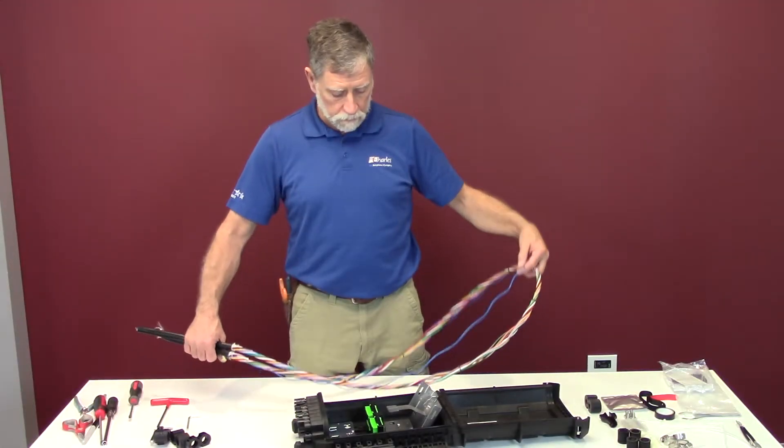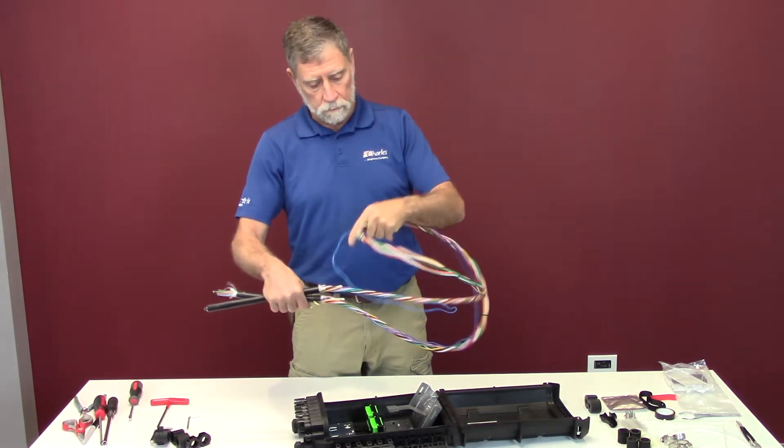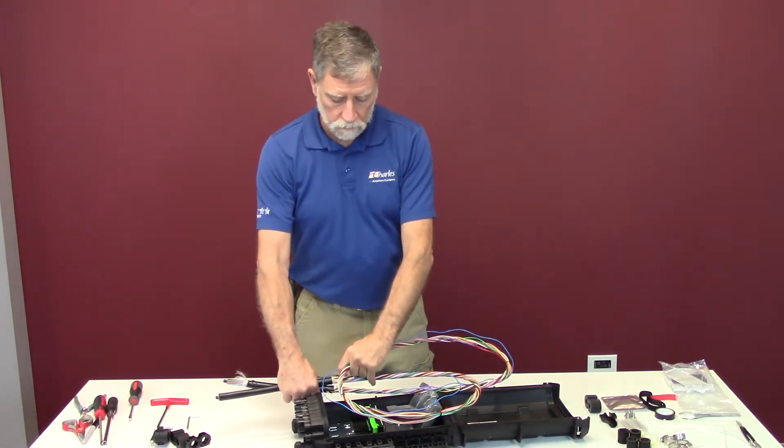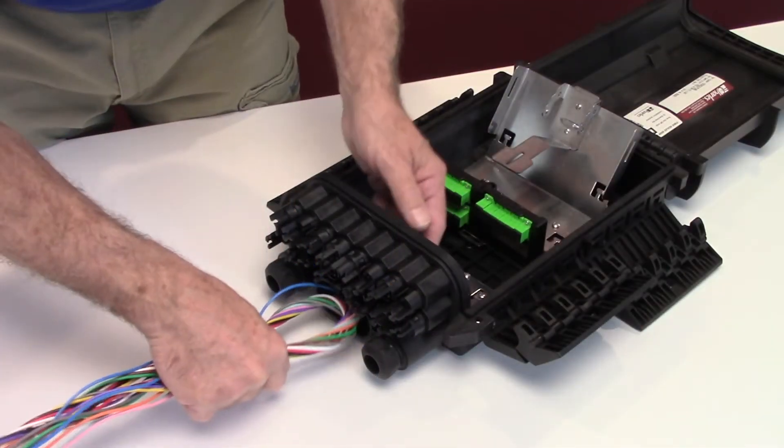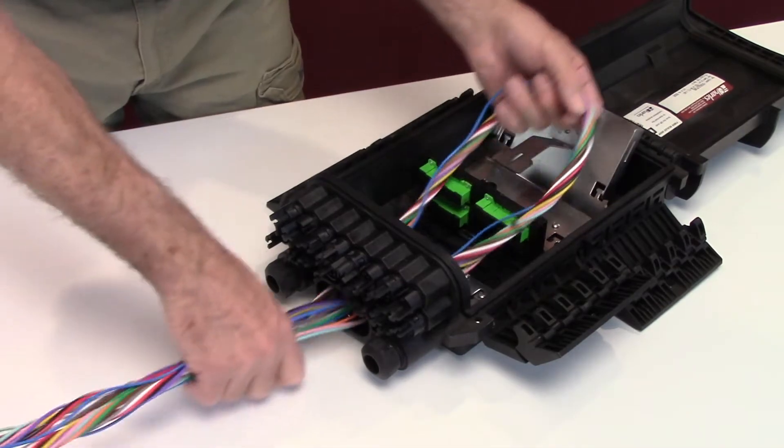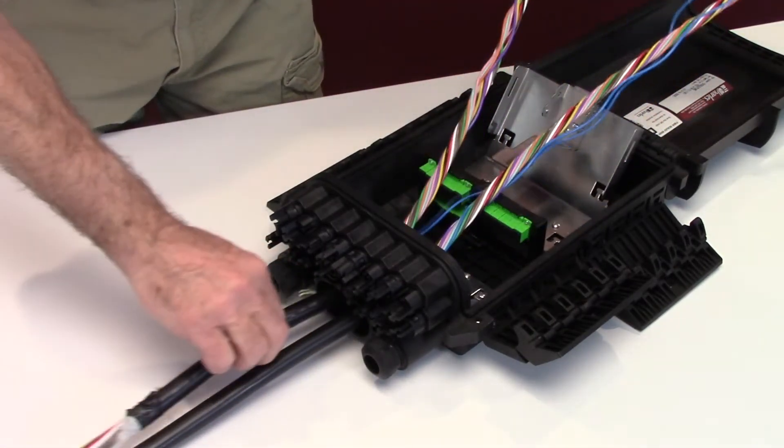The express cable loop must be 6.5 feet to 7 feet in order to fit properly into the FSDC. Insert the cable loop into the FSDC through the express cable port. Observe caution to prevent any excess bending of the cable's buffer tubes.